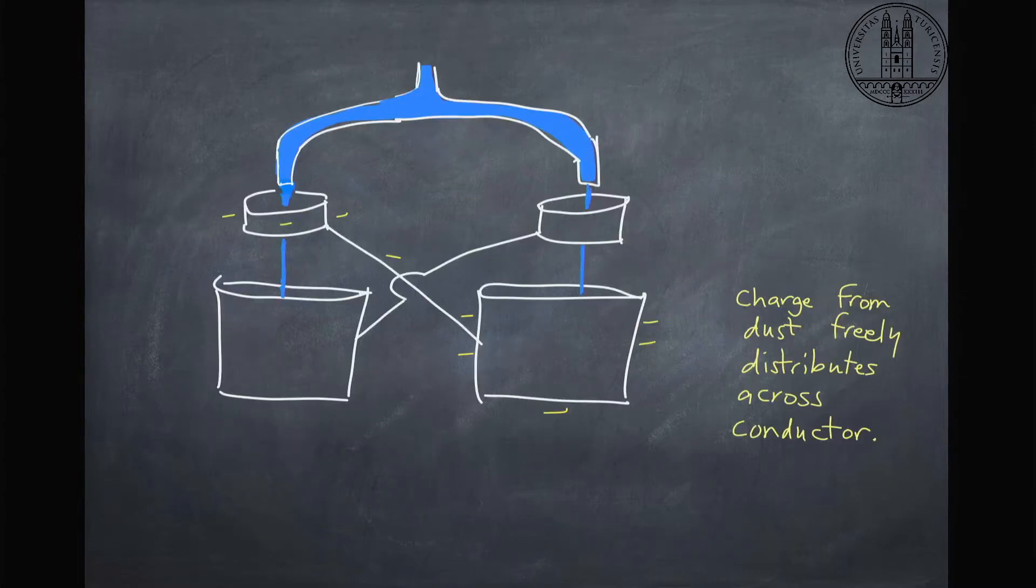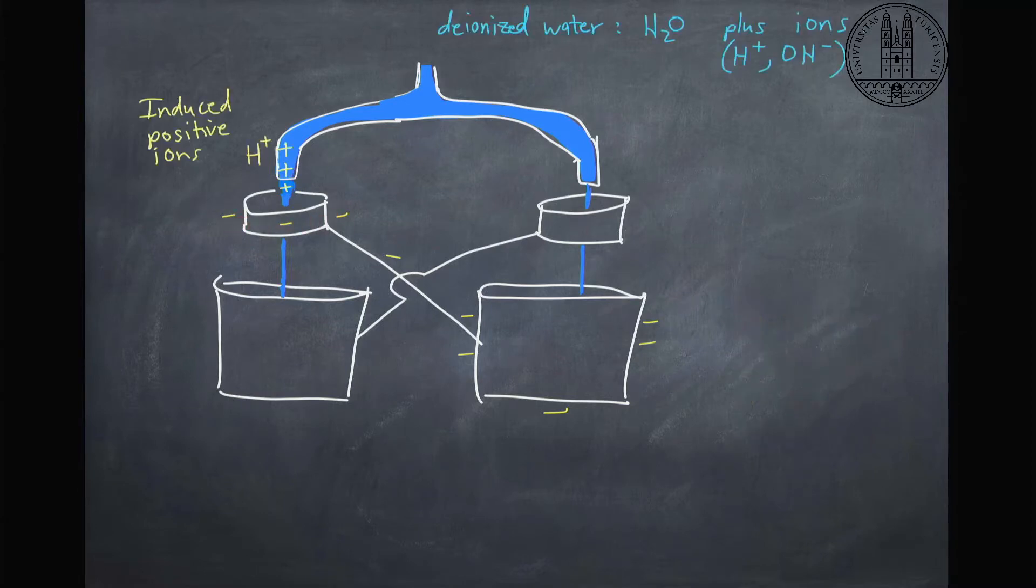Now this is a conductor, so the electric charge will distribute across this whole conductor. And therefore, this water that's falling through will see this negative charge over here. And this water, which has deionized water actually, so there's no salts or anything in it, but the water does have H plus and OH minus ions in it. And so the H plus positive ions will be attracted to this negative charge.